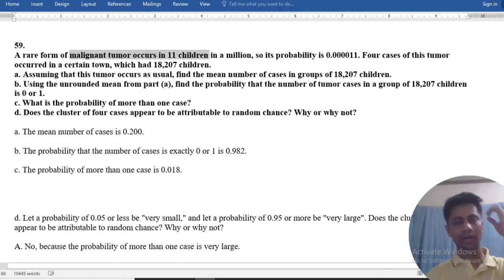A rare form of malignant tumor occurs in 11 children in a million, so the probability is 0.00011. Total children is 18,207.